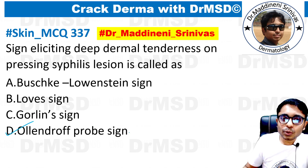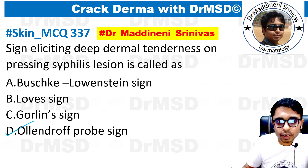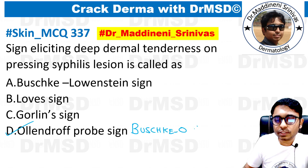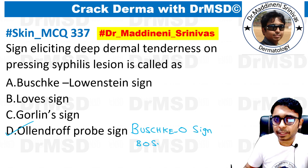This Olendorff probe sign is also called as Buschke-Olendorff sign, and in short it is referred to as BO sign.